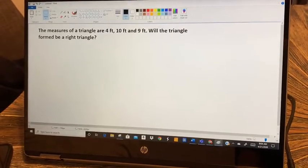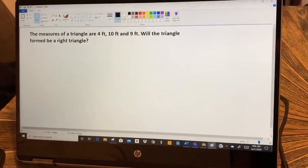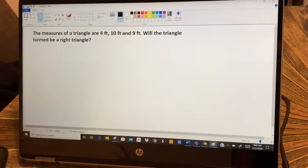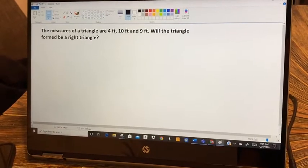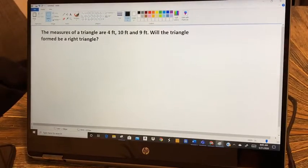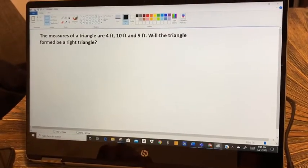It says the measures of a triangle are four feet, ten feet, and nine feet. Will the triangle formed be a right triangle? Now we know that for a triangle, if it's a right triangle, it has to follow the Pythagorean theorem.